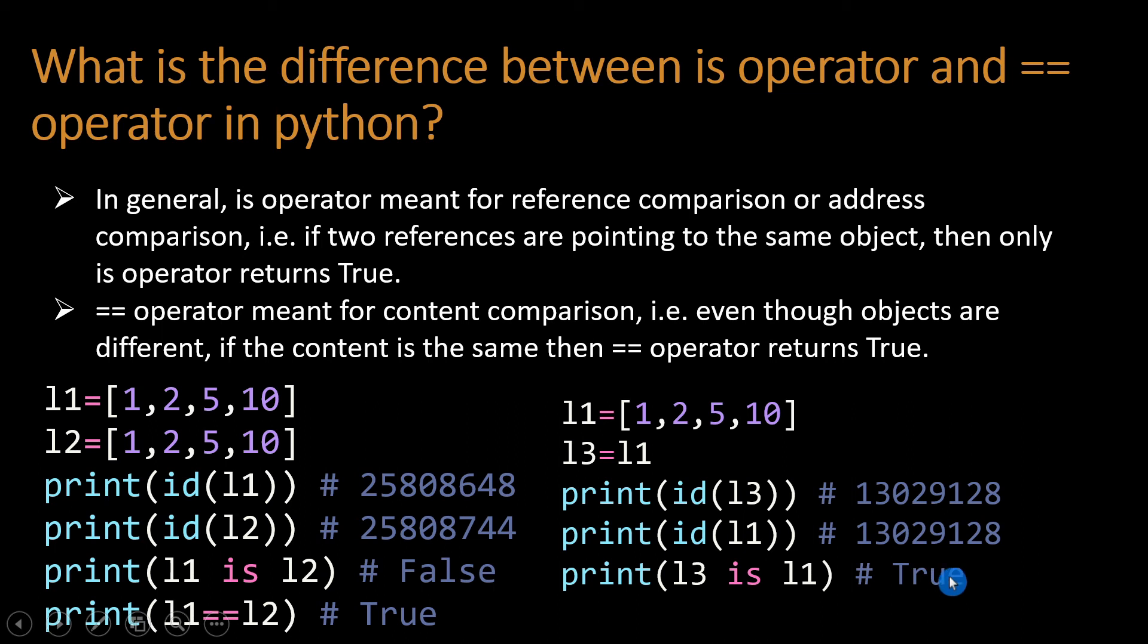Print l3 == l1, it is also True. Why? Because l1 value is [1, 2, 5, 10] and l3 is also [1, 2, 5, 10], because l3 equals l1. So whatever value is in l1 is in l3.